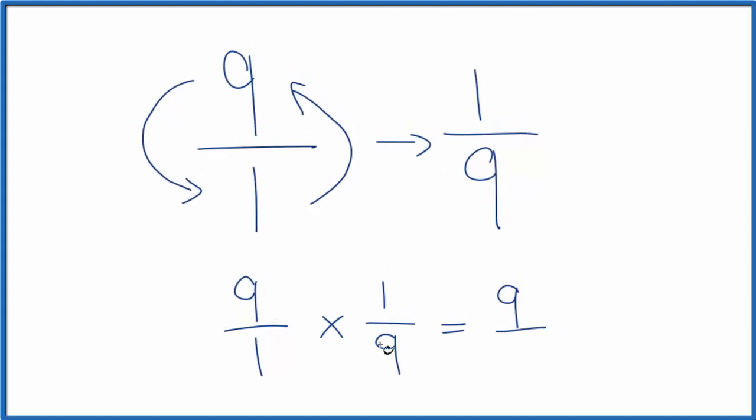Nine times one is nine, and one times nine, that's nine. Nine divided by nine, that's one. So we did it correctly. The reciprocal of nine is one ninth.